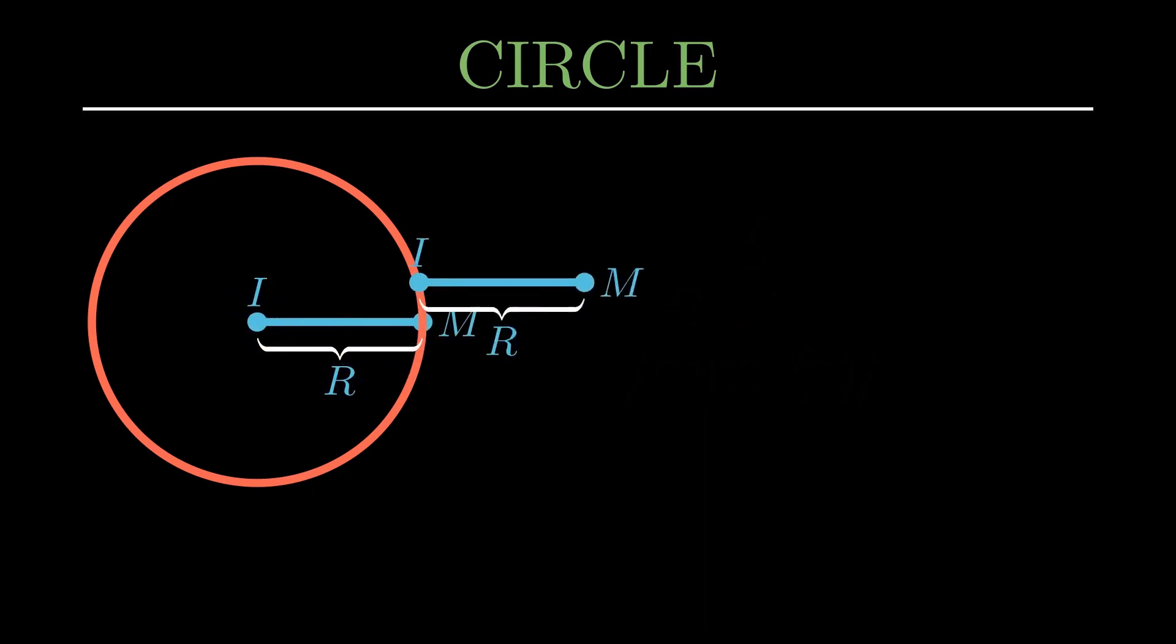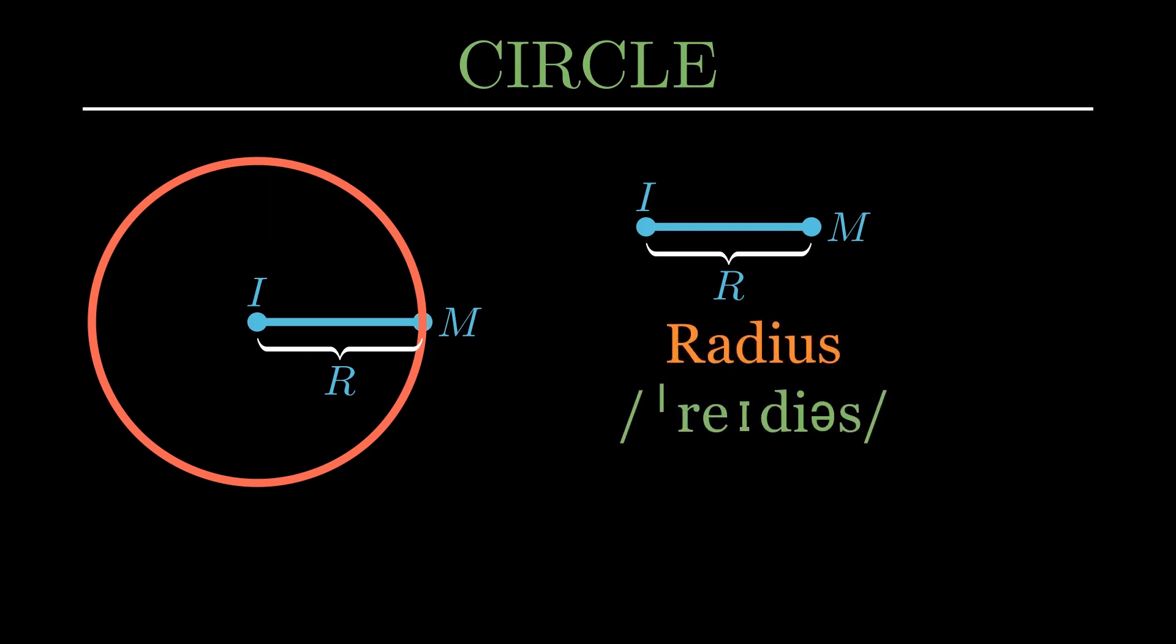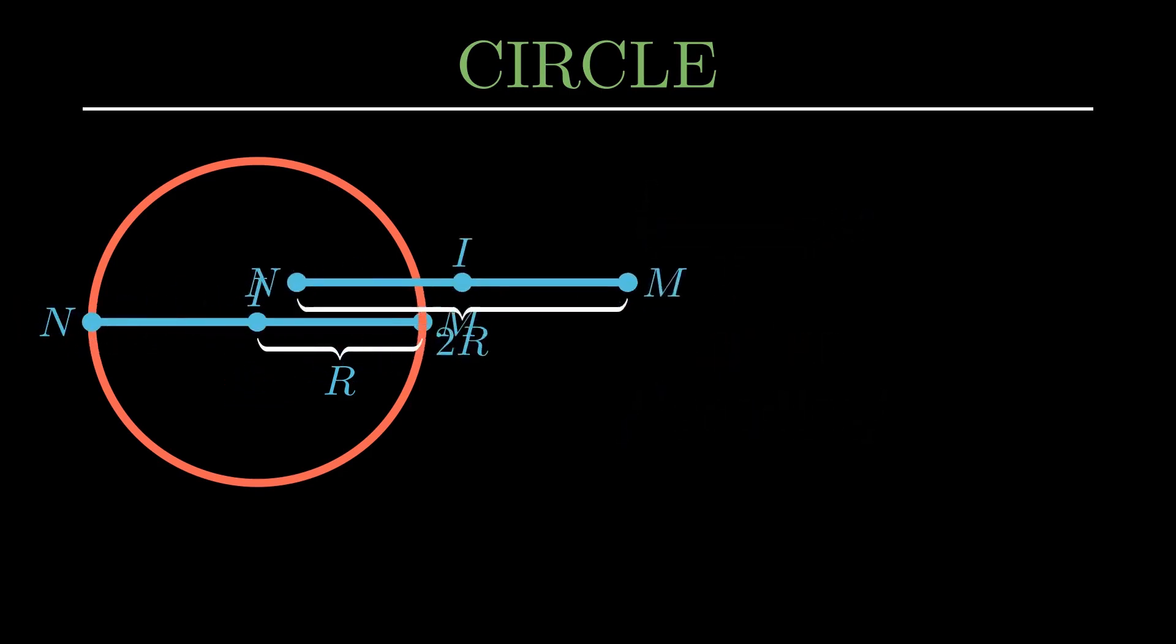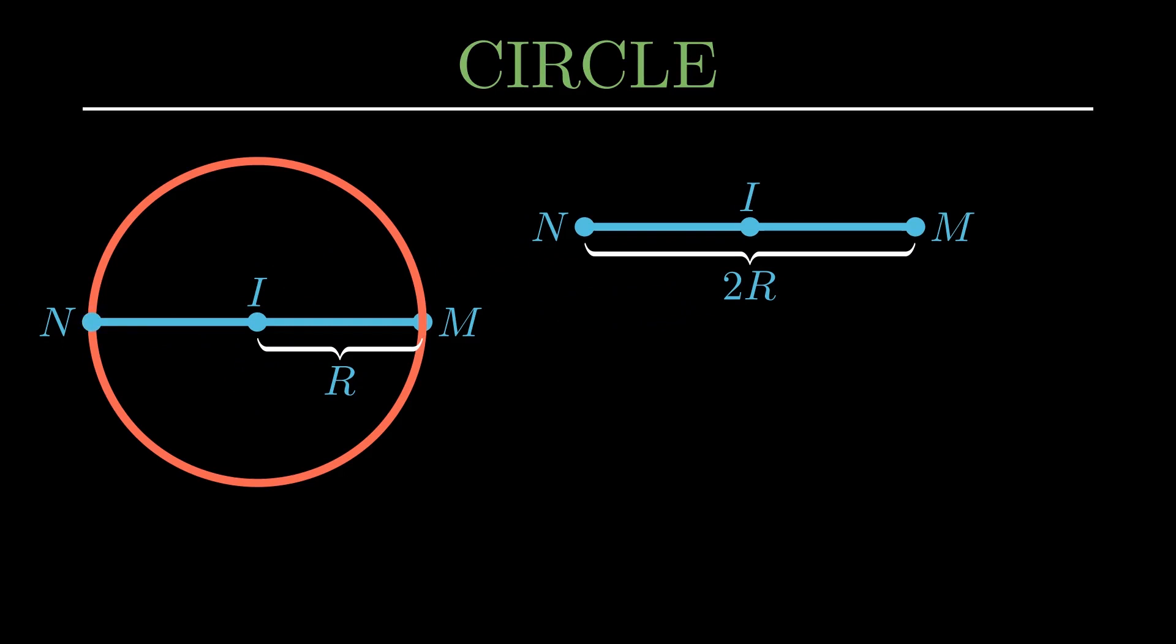A line segment with one end at the center of the circle and the other end on the circle itself is called the radius of the circle. A line segment through the center that touches two points on the edge of the circle is called the diameter of the circle, twice as long as the radius.